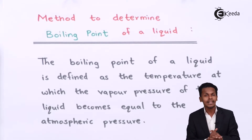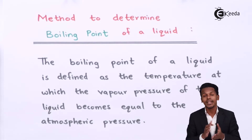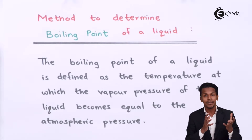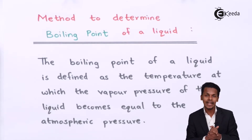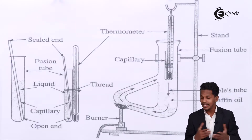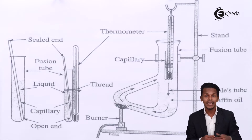Now let us understand the main topic — the method to determine the boiling point of a liquid. We have an explanation as well as a procedure, along with a diagram, so that we can understand how to determine the boiling point of a liquid.